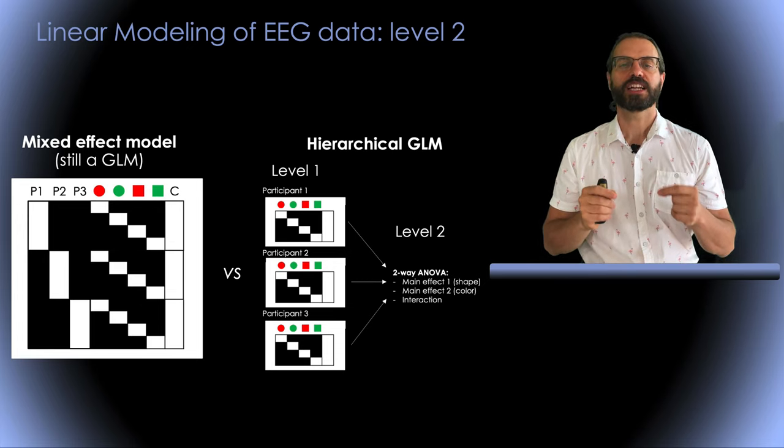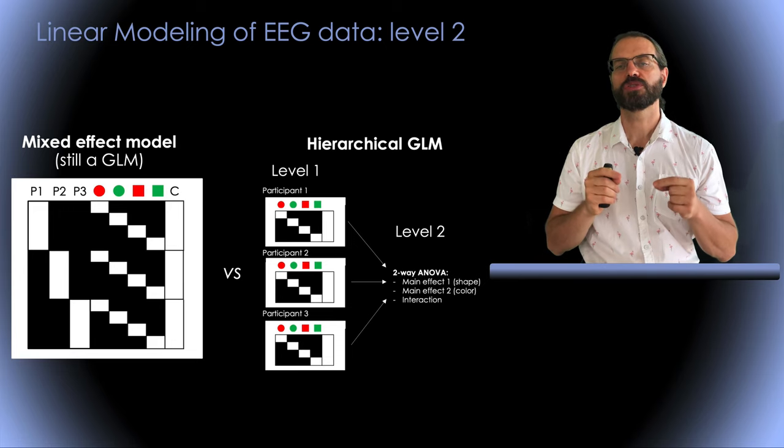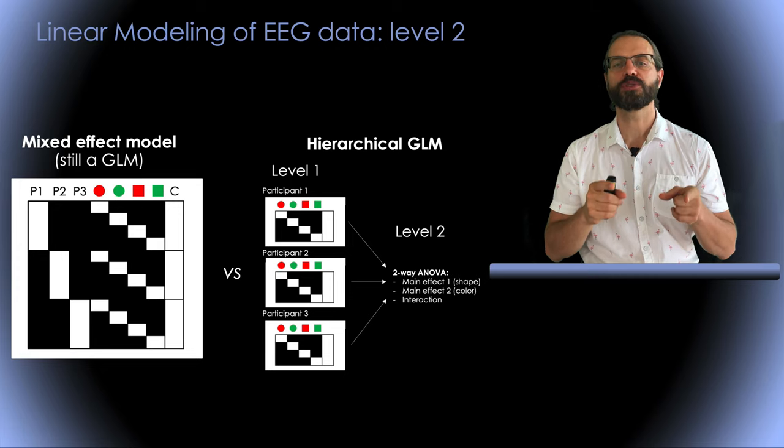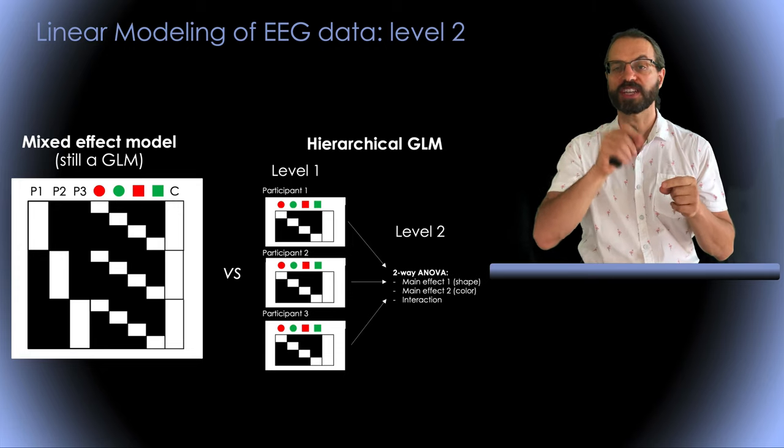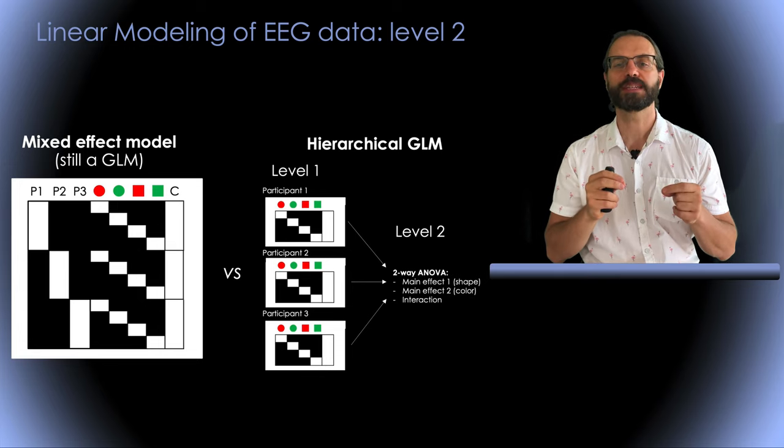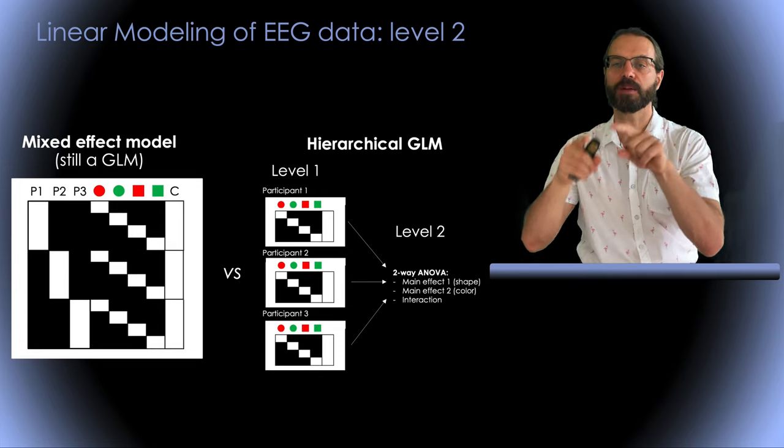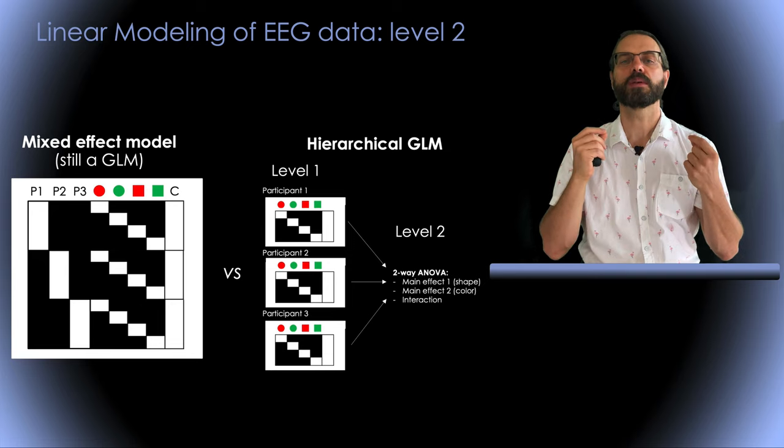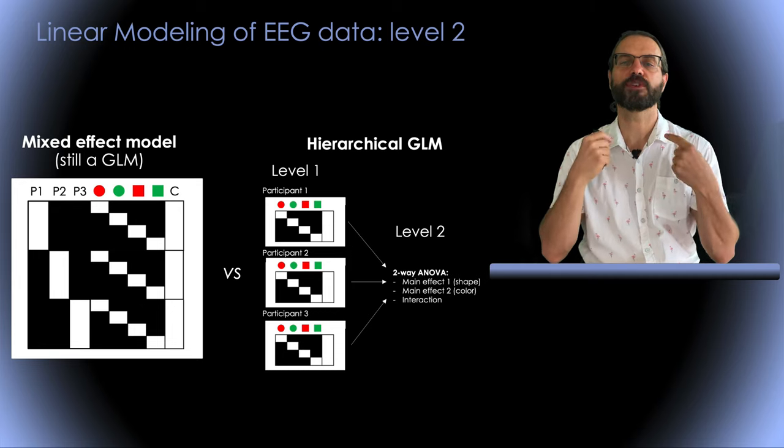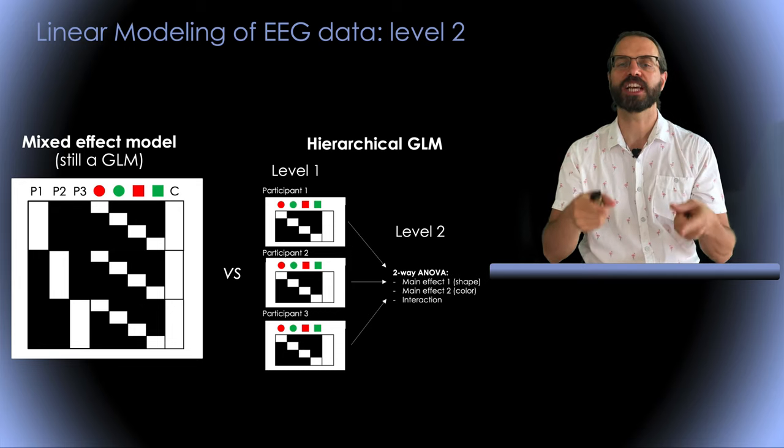I also want to point out that some researchers use GLM on EEG data in a different way. For example, some researchers have used beta parameters to model time. This is useful when you have stimuli that overlap in time. Or it might be possible to use beta parameters to model electrodes. So it's not necessary to run a GLM for each time sample and each electrode.